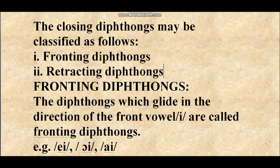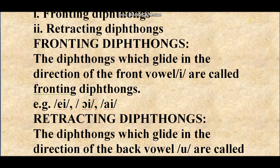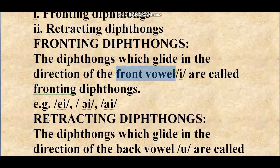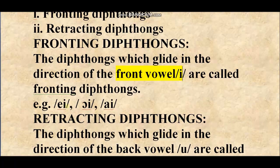The closing diphthongs may be further classified as fronting diphthongs and retracting diphthongs. The diphthongs which glide in the direction of the front vowel /ɪ/ are called fronting diphthongs. The examples are /eɪ/, /ɔɪ/, and /aɪ/ — these are the fronting diphthongs.